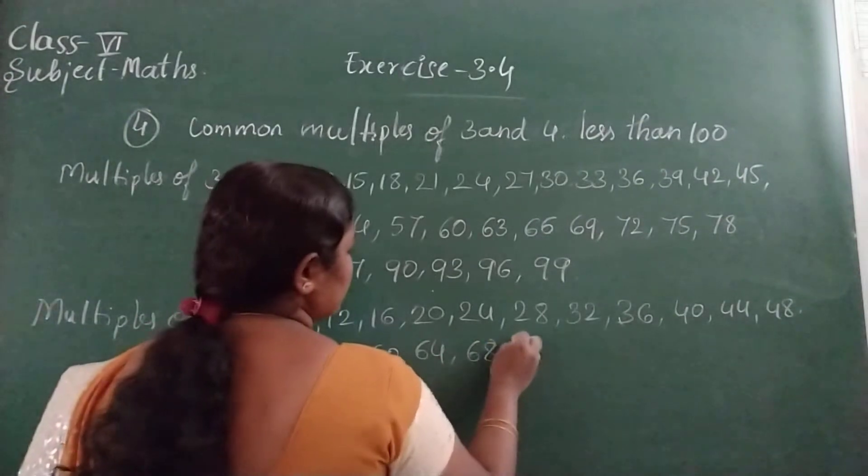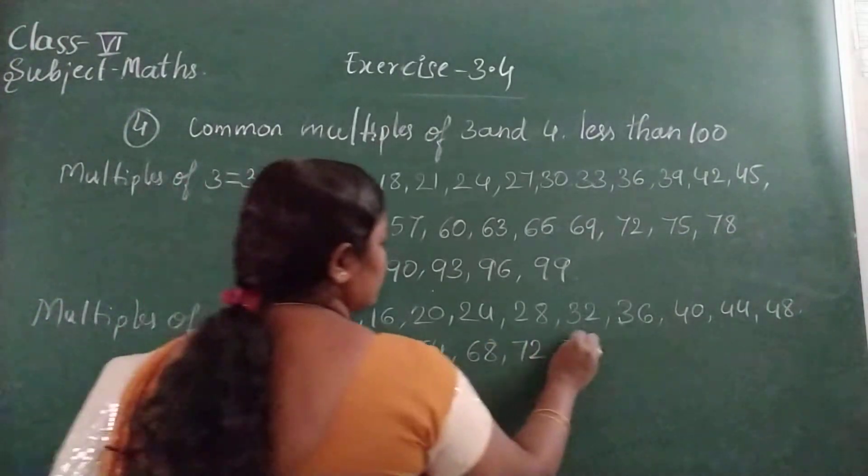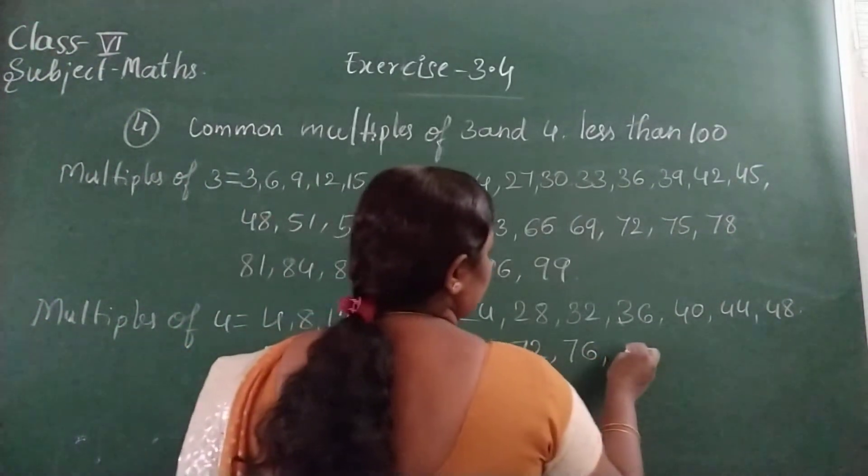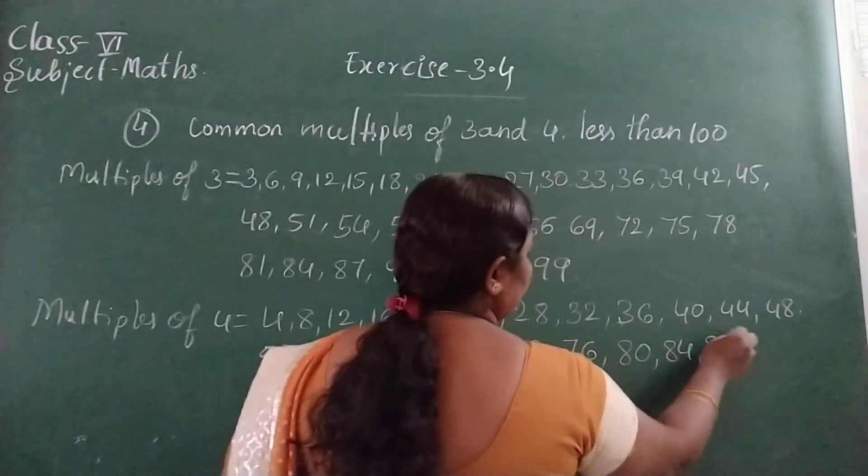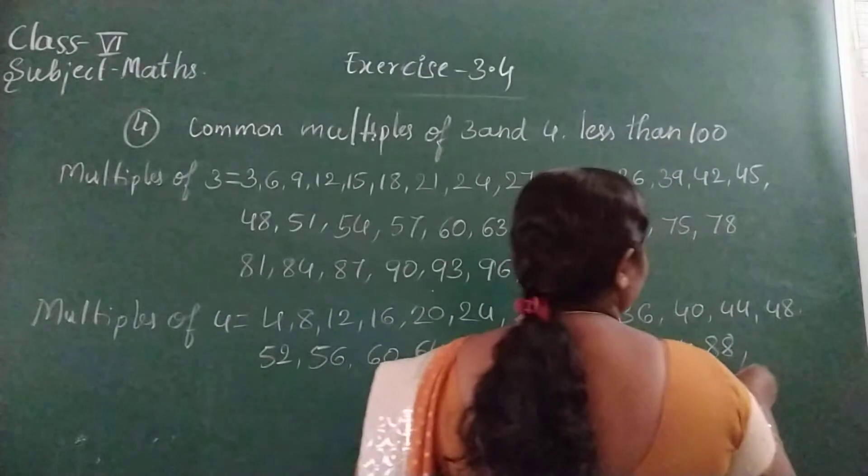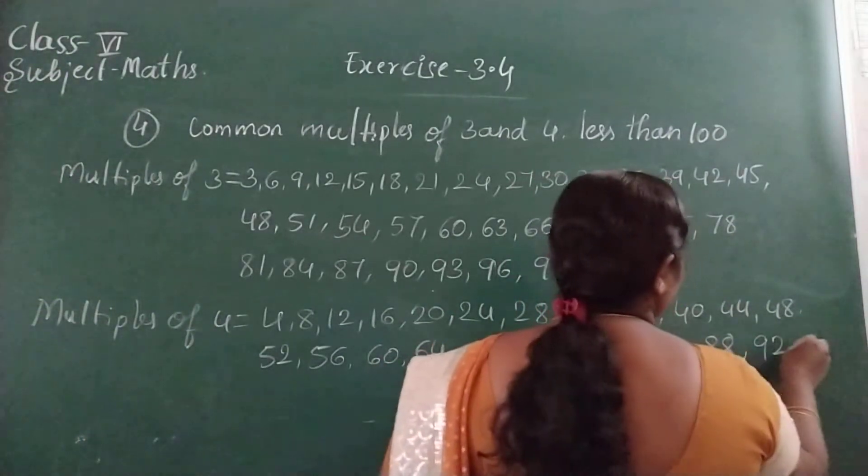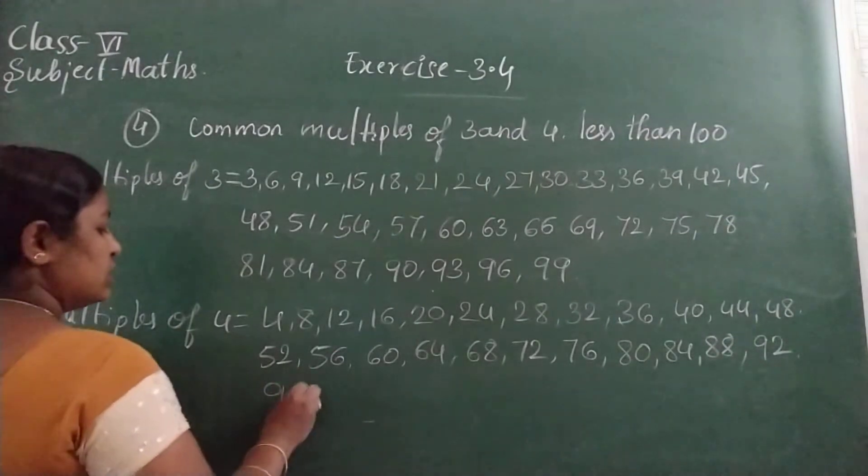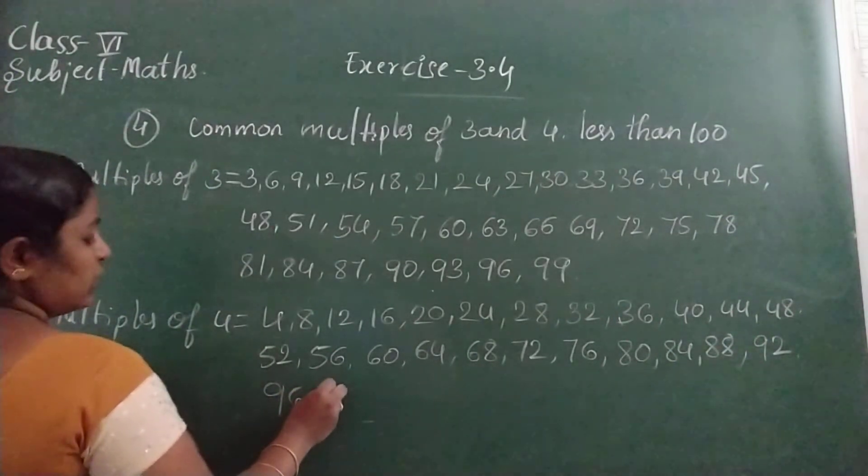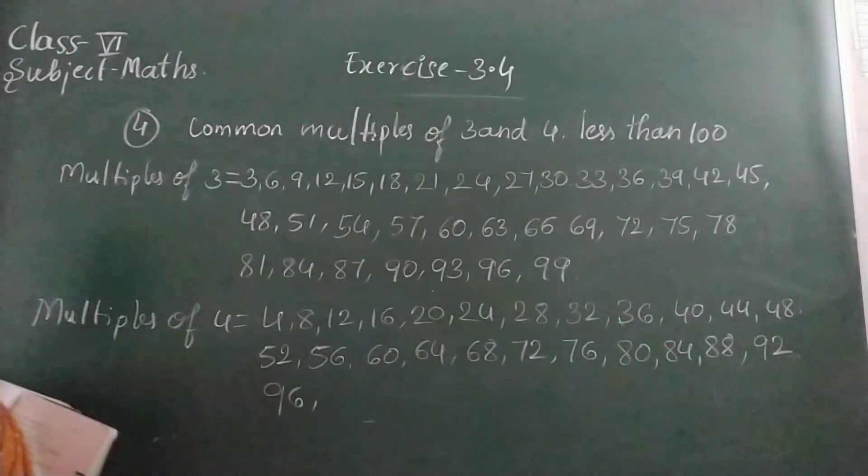Then 68, 72, 76, 80, 84, 88, 92, 96. Then 100 will come, but we want less than 100.